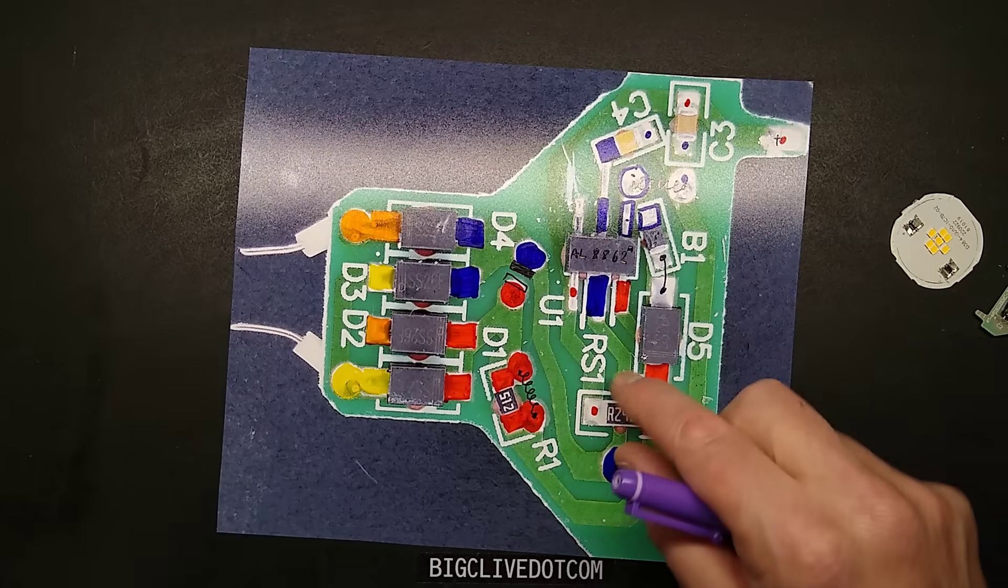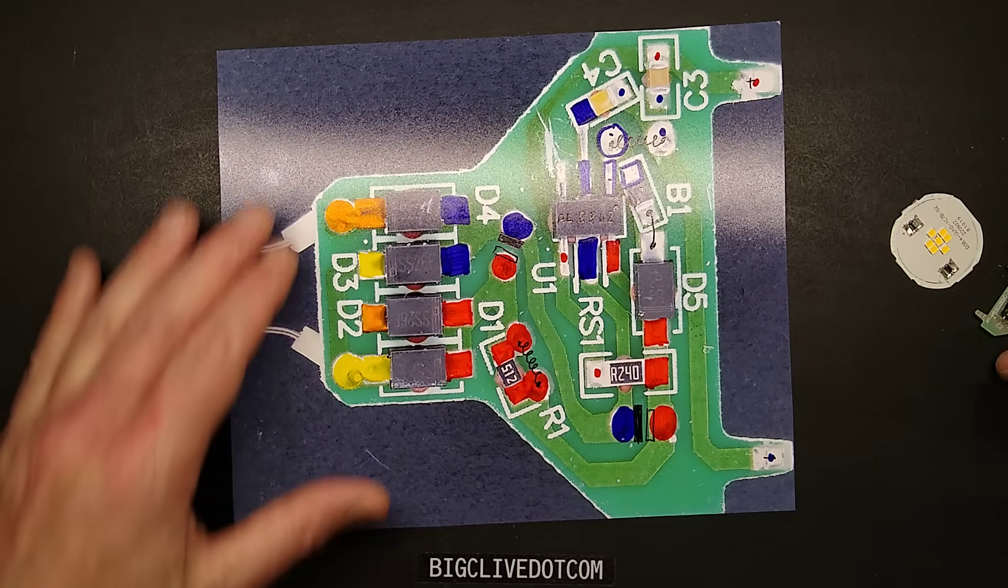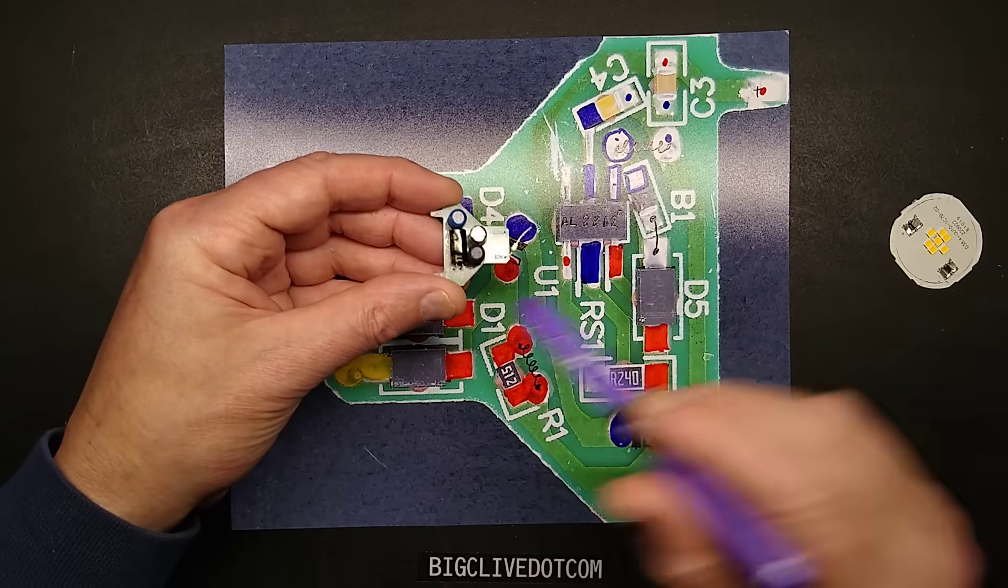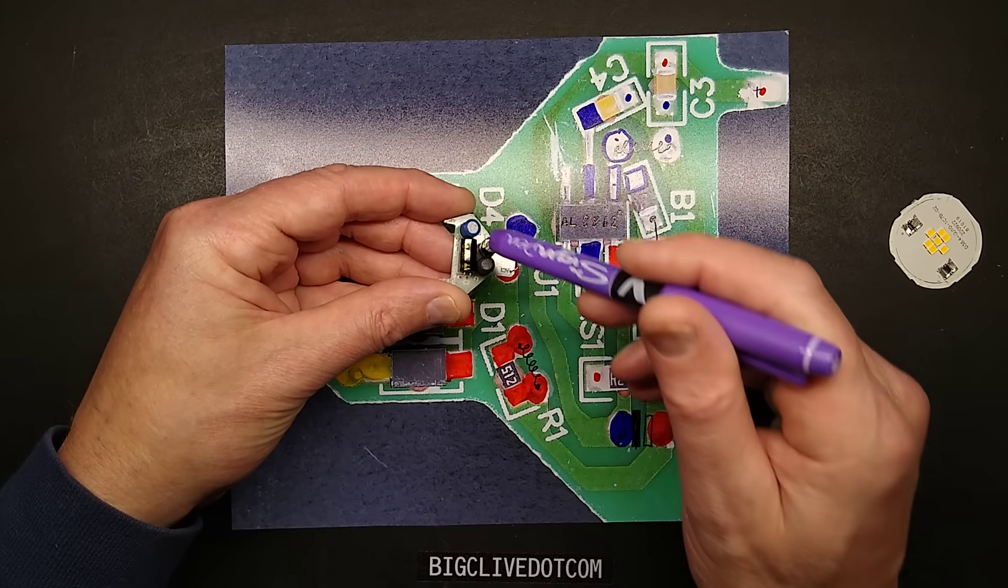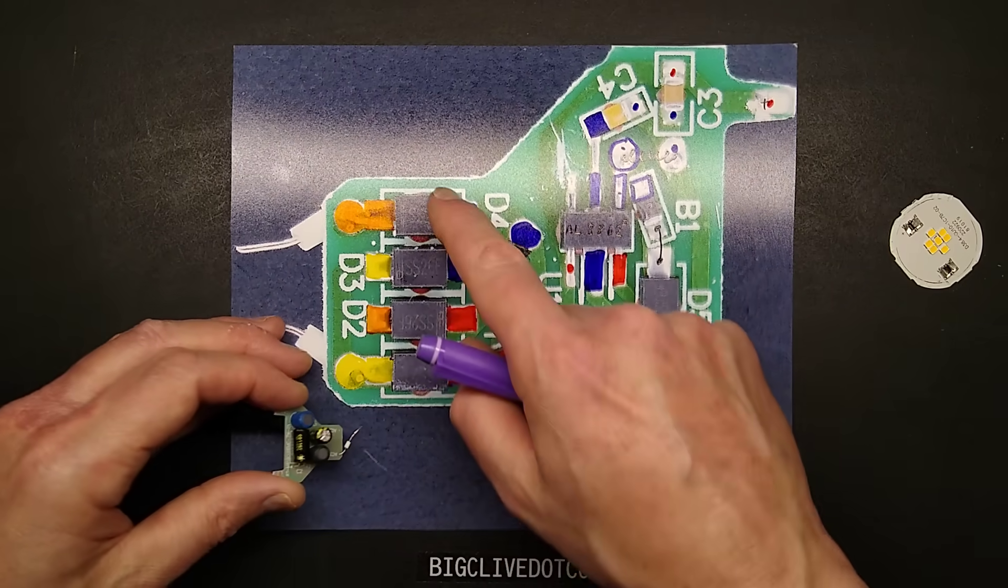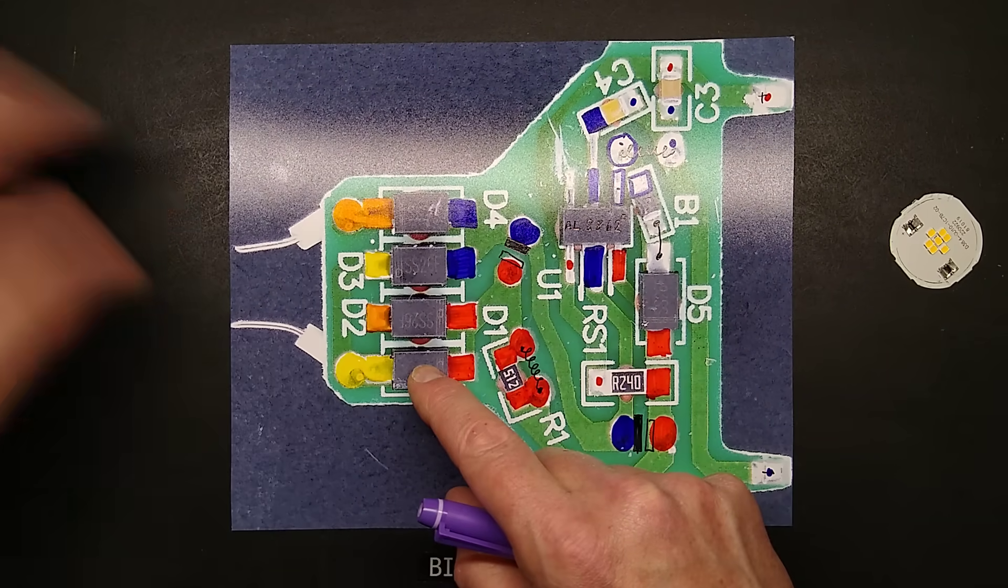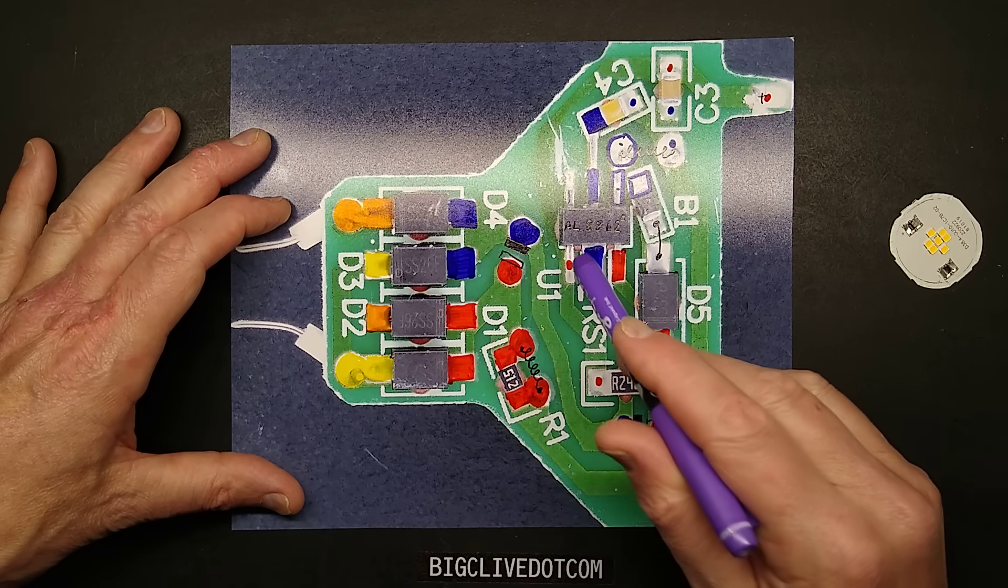The circuit board with the driver has two capacitors, two inductors on this side and then a bridge rectifier, discrete bridge rectifier on this side and a control chip.